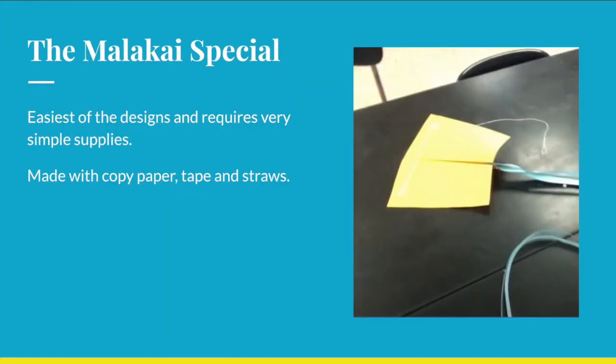A Malakai Special is a Hawaiian kite that requires very simple supplies - just copier paper, tape, and straws. It flies easily in all weather conditions including low wind.